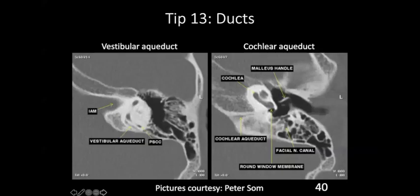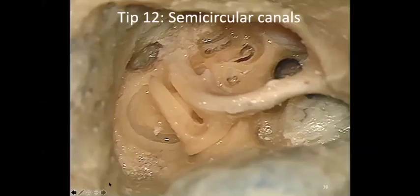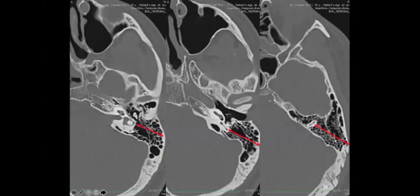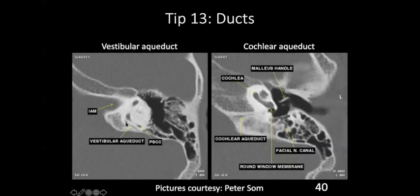Two important ducts to remember: the vestibular aqueduct and the cochlear aqueduct. Depending on thickness of the film, they may not always be clearly seen. The vestibular aqueduct, like the posterior semicircular canal, is parallel to the posterior surface of the temporal bone. It is closer to the dura mater, posterior to the posterior semicircular. In between the dura mater and the posterior semicircular is the vestibular aqueduct. It is parallel to the posterior surface of the temporal bone, and is usually seen at the level of the internal auditory meatus.